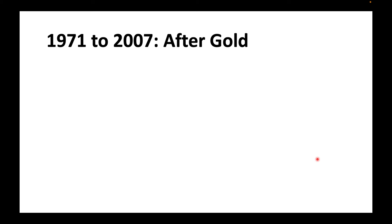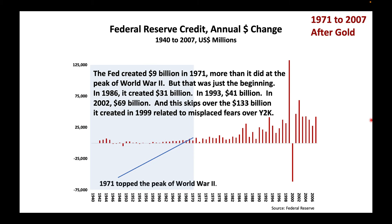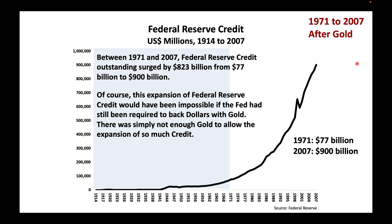After gold, from 1971 to 2007: the Fed created $9 billion in 1971 — more than it did at the peak of World War II — but that was just the beginning. In 1986, it created $31 billion. In 1993, $41 billion. In 2002, $69 billion — and this skips over the $133 billion the Fed created in 1999 related to its misplaced fears over Y2K. Between 1971 and 2007, Federal Reserve Credit outstanding surged by $823 billion, from $77 billion to $900 billion. Of course, this expansion would have been impossible if the Fed had still been required to back dollars with gold — there was simply not enough gold to allow the expansion of so much credit.